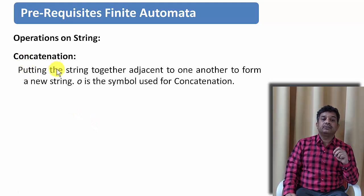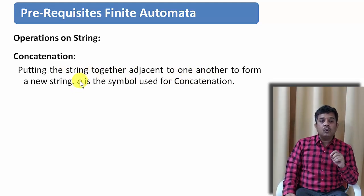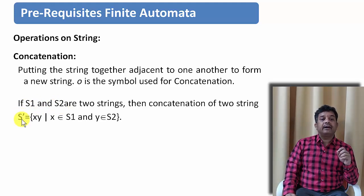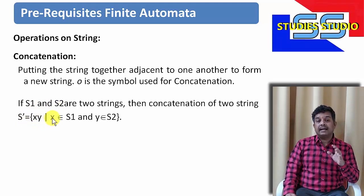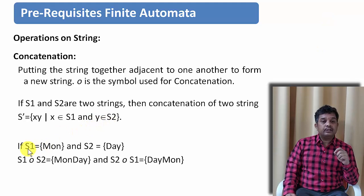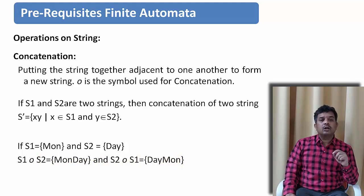The first operation is concatenation. It means putting strings together adjacent to one another to form a new string. Let us say S1 is a string and S2 is another string. Then the concatenation of S1 and S2 produces a new string XY where X is from S1 and Y is from S2. For example, if S1 is 'mon' and S2 is 'day', then S1 concatenated with S2 is 'Monday', and S2 concatenated with S1 is 'daymon'. This concatenation is the same as concatenation in any programming language.